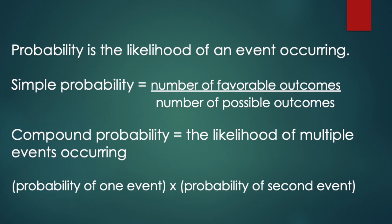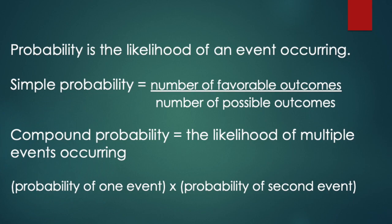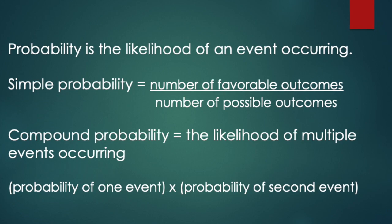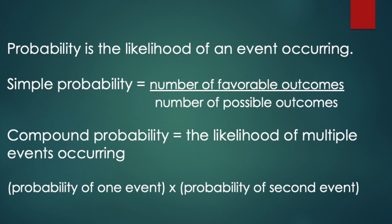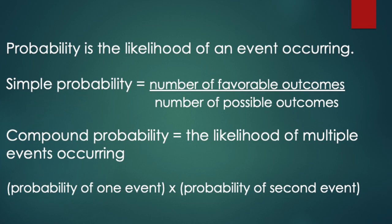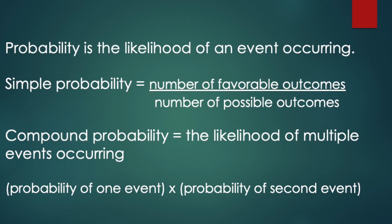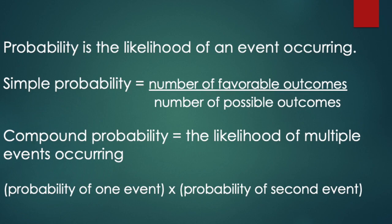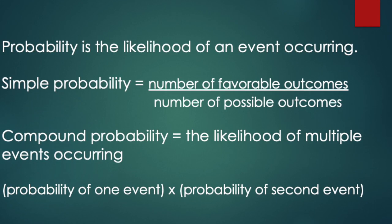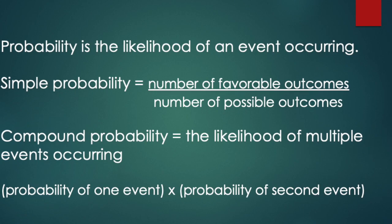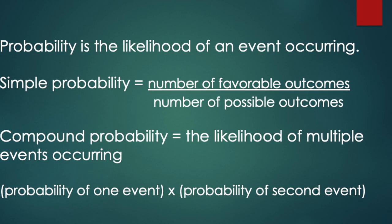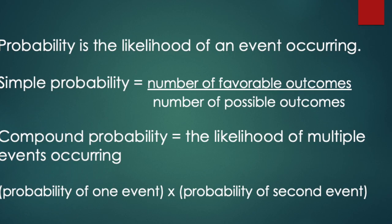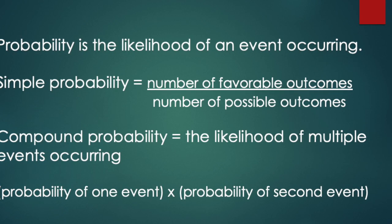For example, a favorable outcome: what is the likelihood of it raining today versus not raining? Or what is the likelihood of drawing a queen from a deck of cards? There are four queens, so we put four over the total possible outcomes, which is 52 because there are 52 cards.